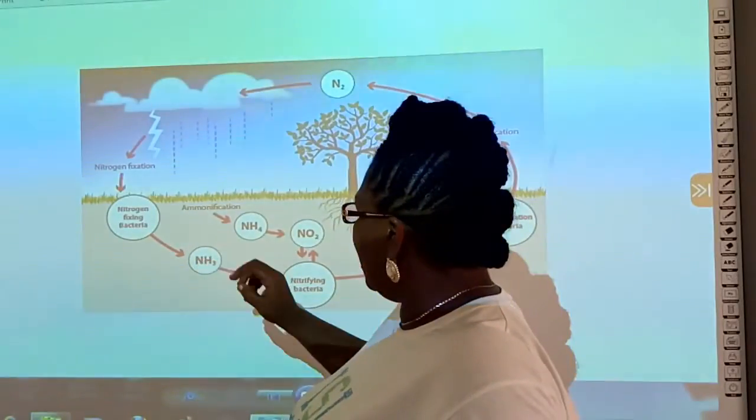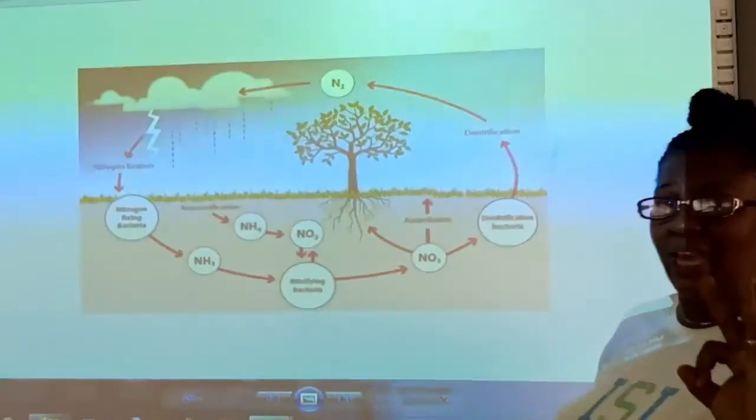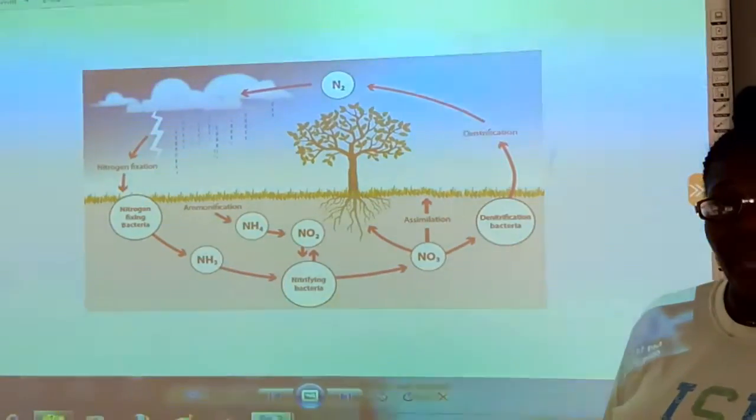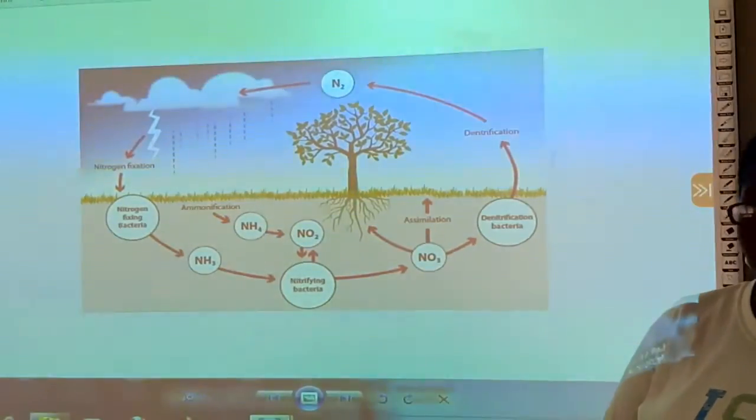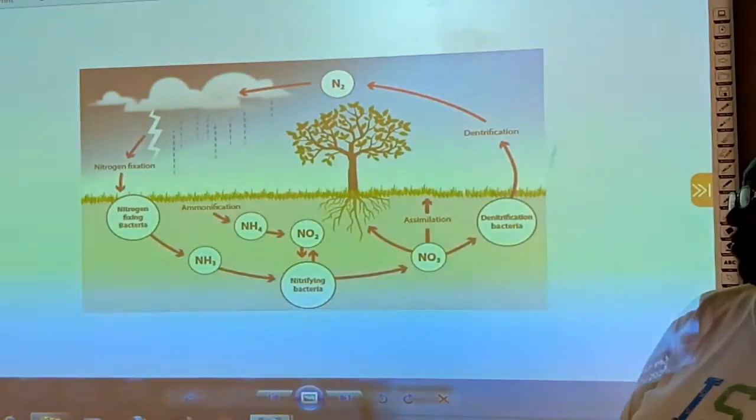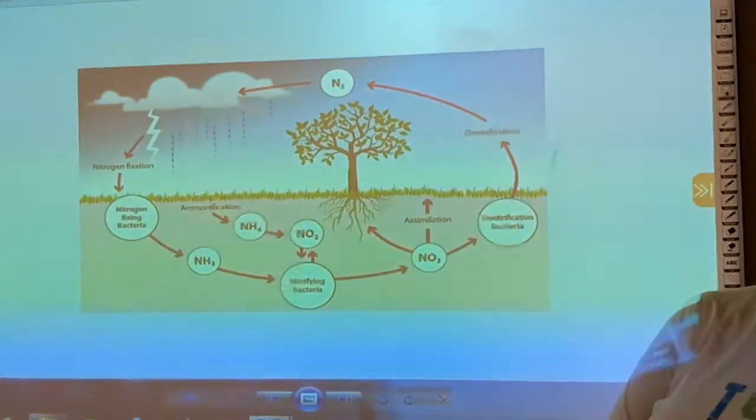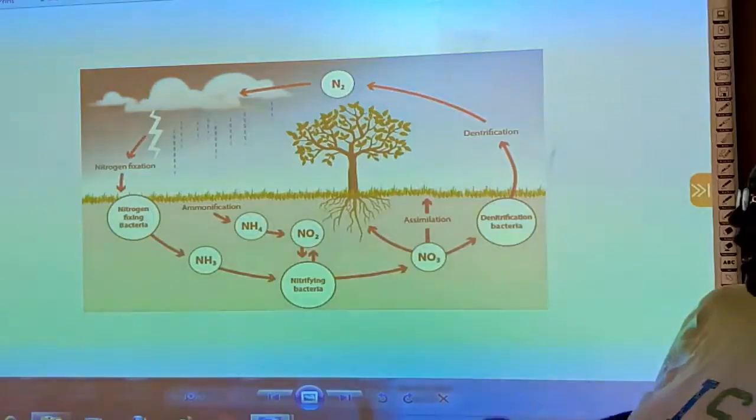Then the ammonia with the help of nitrifying bacteria, which we have said is in two stages. The ammonia is first converted to nitrites with the help of nitrosomonas and some other bacteria. And then the nitrite is converted back to nitrates in the soil.